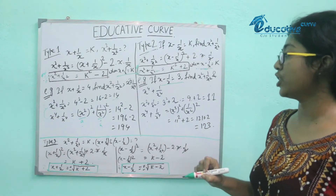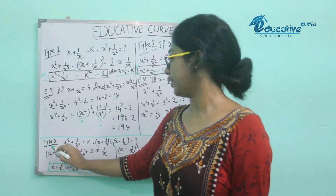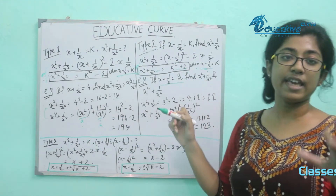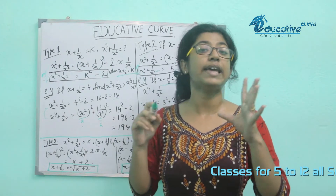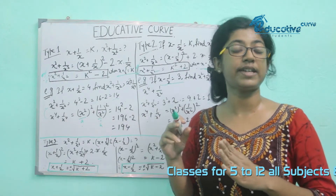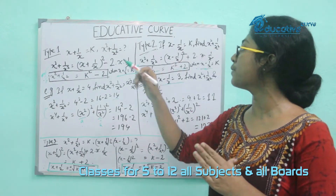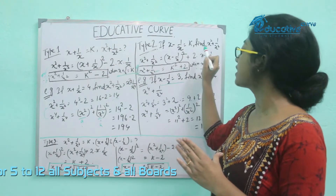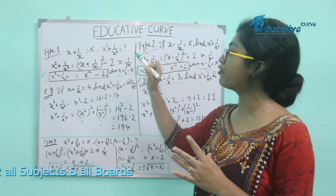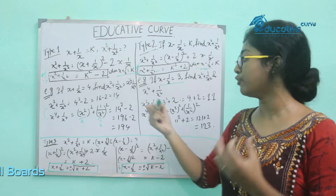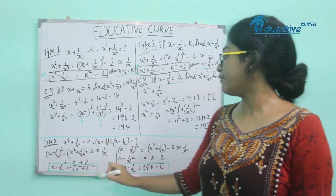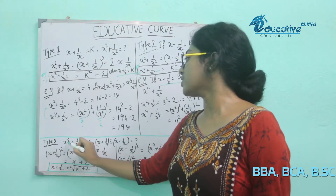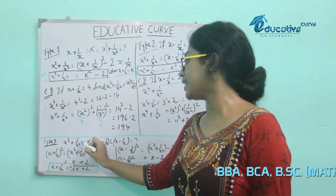We call it Type 3. In Type 1, Type 2, and Type 3, given x plus 1 by x to the power of x minus 1 by x, we find x squared plus 1 by x squared value. In Type 3, we find x squared plus 1 by x squared value.